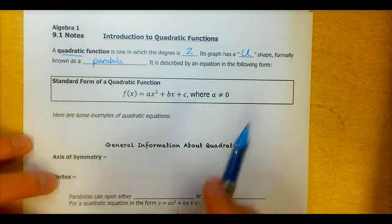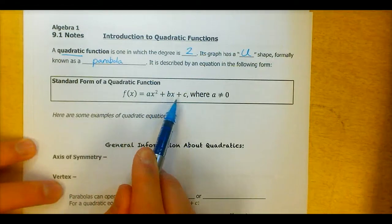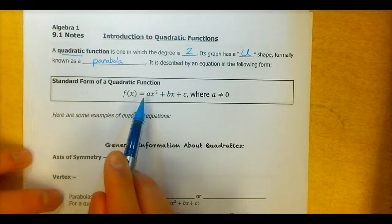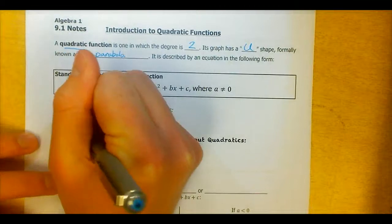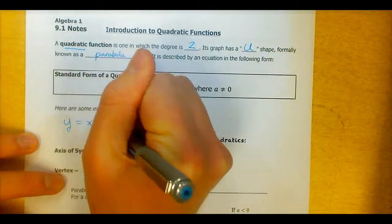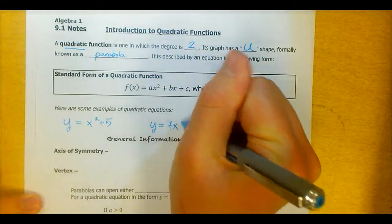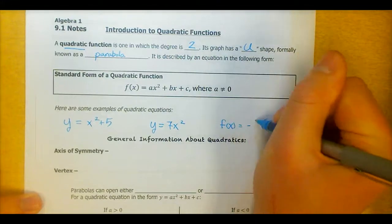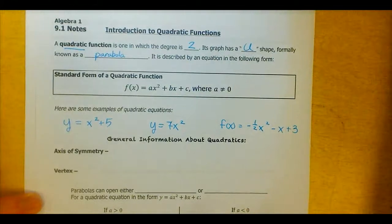The form of a quadratic equation is this — this is the standard form: f of x equals ax squared plus bx plus c. Notice the exponent of two there; that makes it degree two. The largest exponent is two. Here are some examples: y equals x squared plus 5, y equals 7x squared, or f of x equals negative one-half x squared minus x plus 3. You can have fraction coefficients in quadratic equations as well.